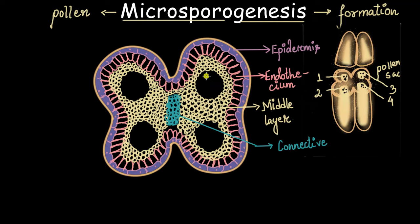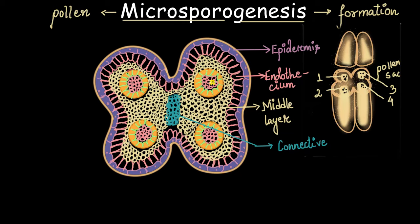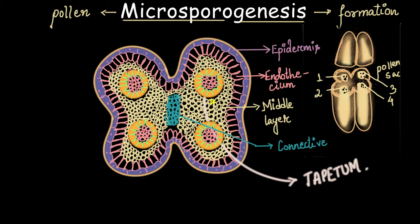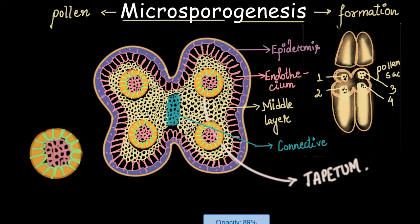They protect the microspores that will be growing inside. Let me quickly show you the microspores. These pink cells that you see here are the ones that will give rise to microspores — so these are not microspores yet. The yellow covering that you see beside them is the most important layer; it is called the tapetum. This layer is made up of tapetal cells, and the layer itself is called the tapetum.